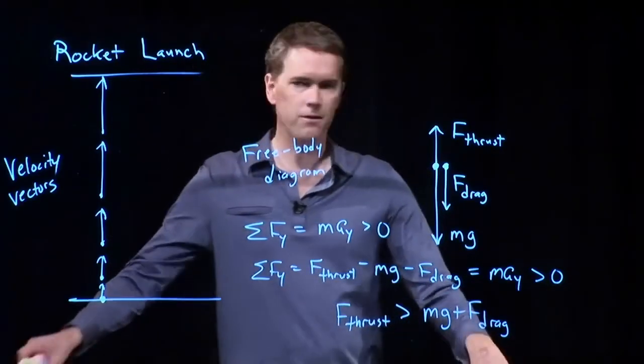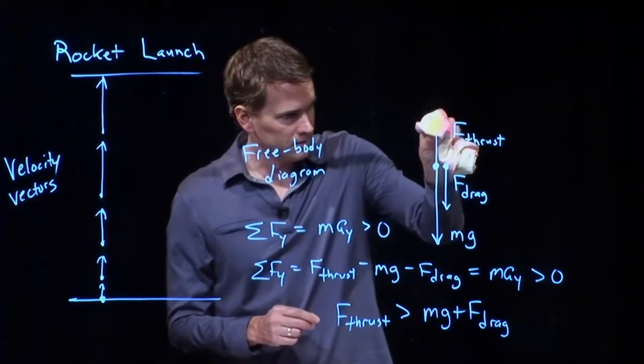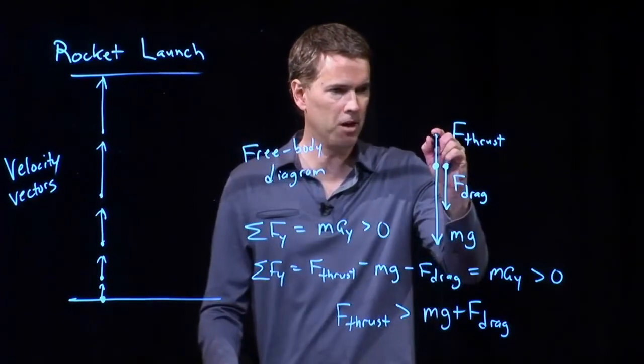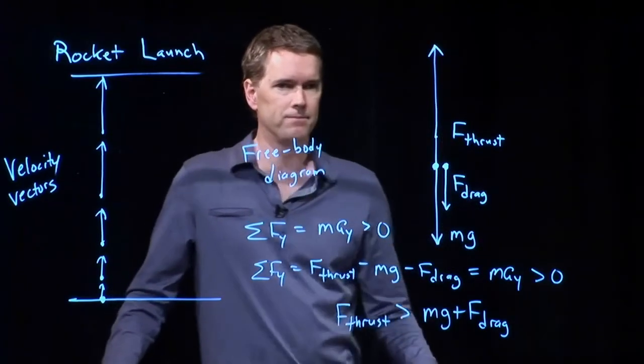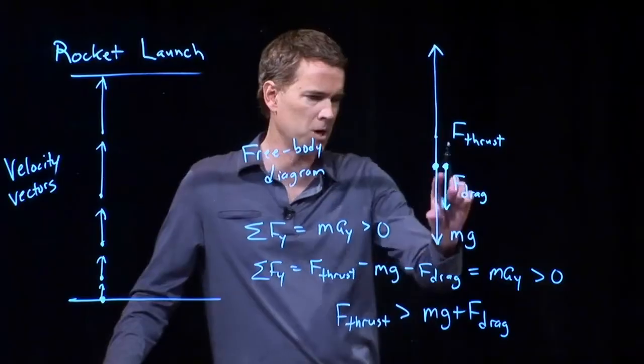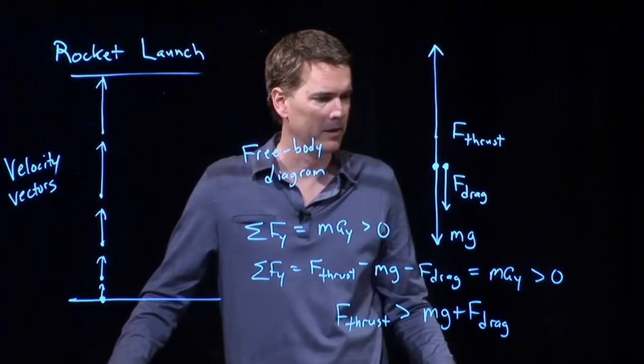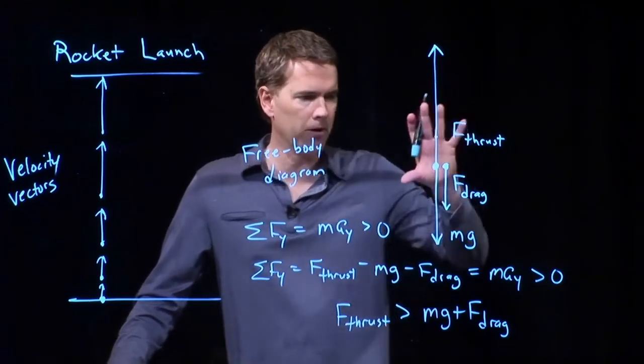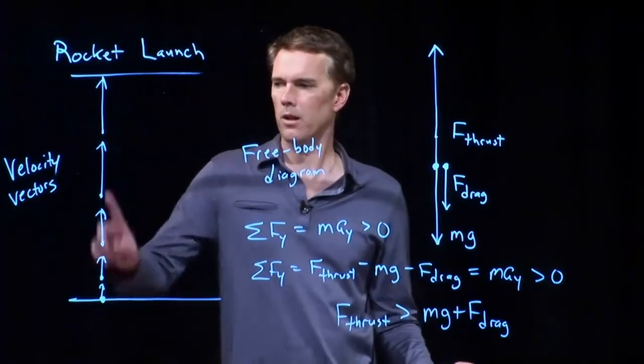So you're exactly right that if this thing is going to accelerate upwards, F thrust has to be bigger. And in fact, it has to be bigger than the sum of both of those. So maybe something more like that, right? You can measure them out and see if we're right. Maybe you have to go a little bit taller, but that seems about right. Okay. If F thrust is bigger than both of those things, then it will accelerate upwards.